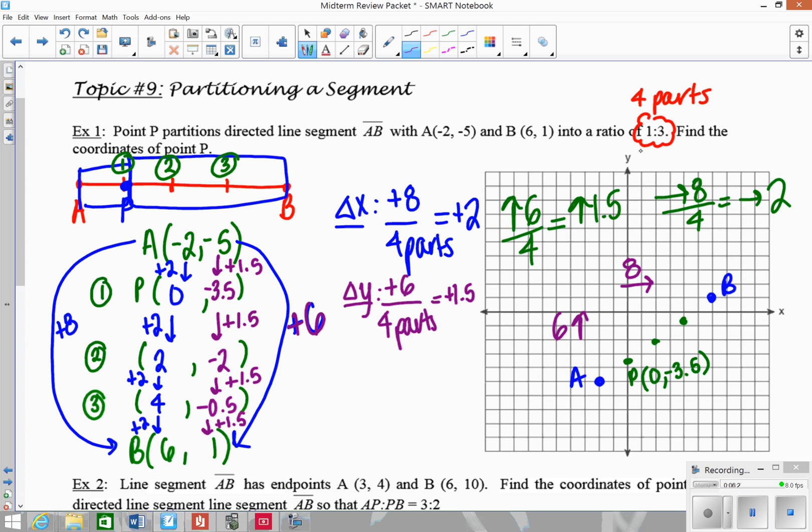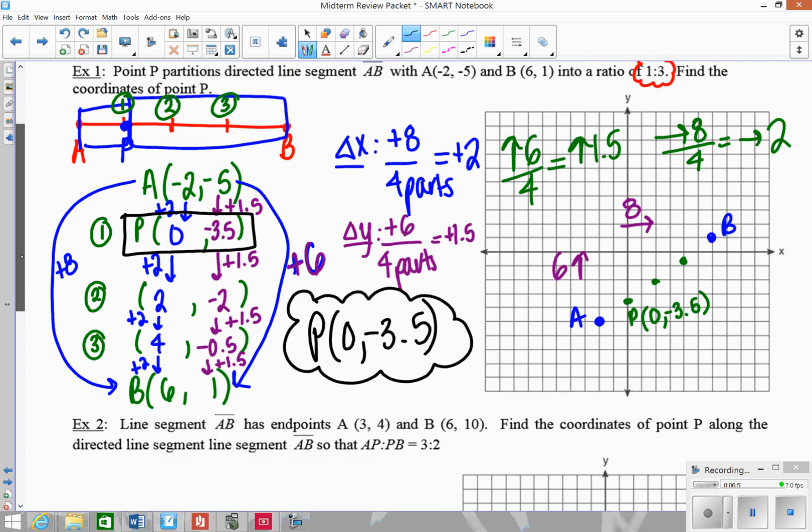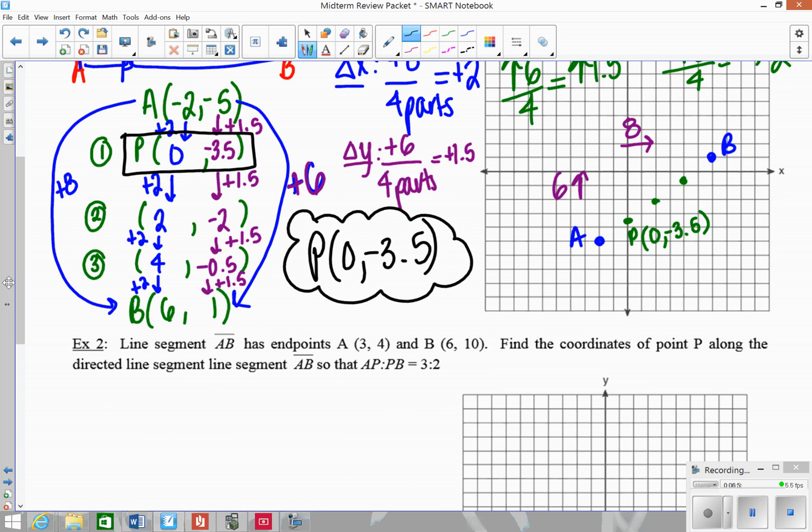So this same process will always be used. The only difference is in this case, I'm trying to find the ratio from 1, so 1 to 3. So when I look for my final answer, it's going to occur at this first point that I found because I need to split the segment so that it's 1 part to 3 parts. So P, the coordinates of P, are going to be 0, negative 3.5. So you do not have to show both sets of work, algebraic and graphically, you would only have to do one, which algebraic is really going to be the way to go with these because you're going to get messy numbers and it won't always work on a graph.